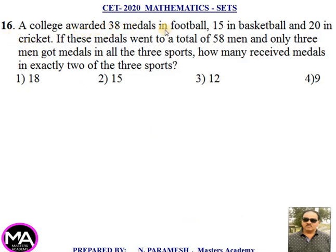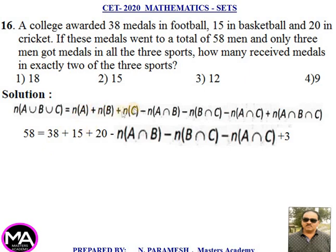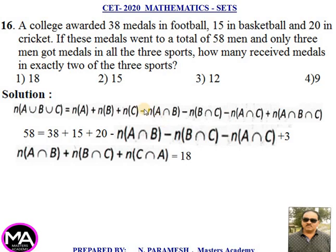16th question. A college awarded 38 medals in football, 15 in basketball, and 20 in cricket. If these medals went to a total of 58 men and only 3 men got medals in all three sports, how many received medals in exactly two of the three sports? Solution: Using N(A ∪ B ∪ C) = N(A) + N(B) + N(C) − N(A∩B) − N(B∩C) − N(A∩C) + N(A∩B∩C): 58 = 38 + 15 + 20 − [N(A∩B) + N(B∩C) + N(A∩C)] + 3. Therefore N(A∩B) + N(B∩C) + N(A∩C) = 76 − 58 = 18.